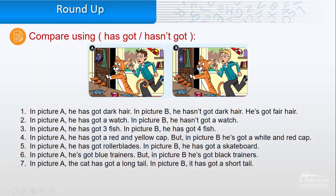Four, in picture A, he has got a red and yellow cap. But in picture B, he's got a white and red cap. Five, in picture A, he has got rollerblades. In picture B, he has got a skateboard.